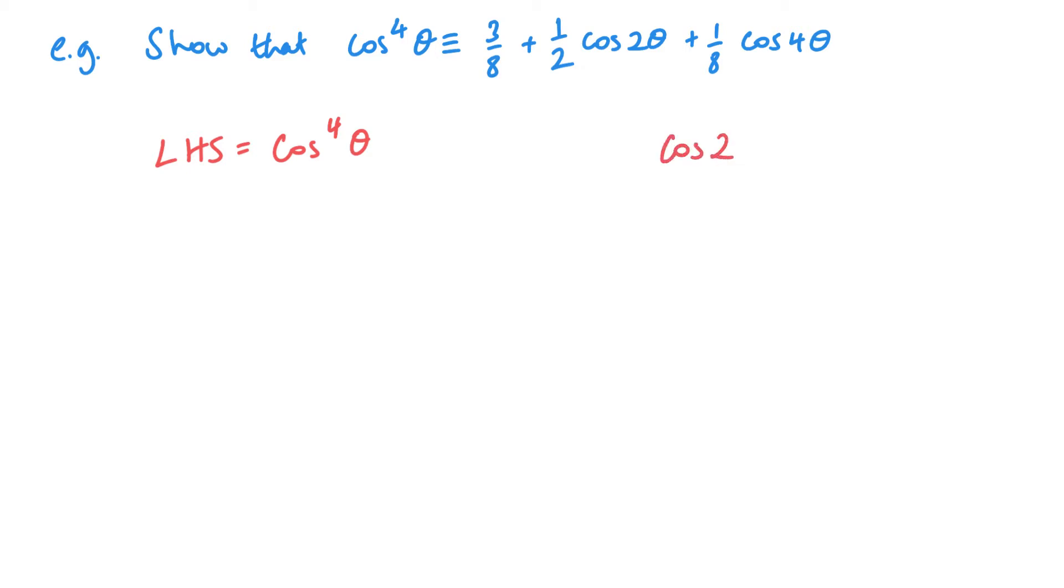So let's have a think of the double angle formula for cos, and this is 2 cos squared theta minus 1 equals cos 2 theta. And that's the one I'm using because everything in my identity at the top is in terms of cos.